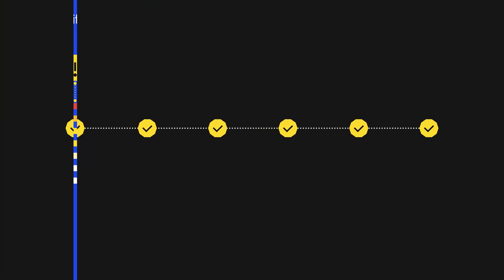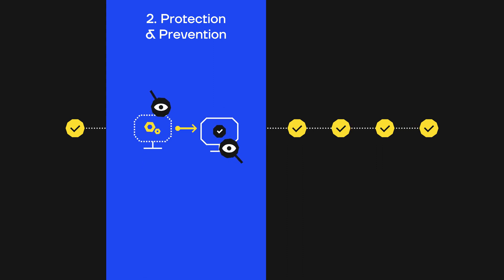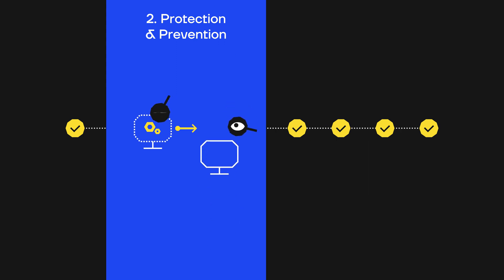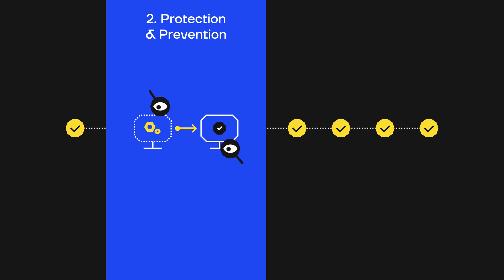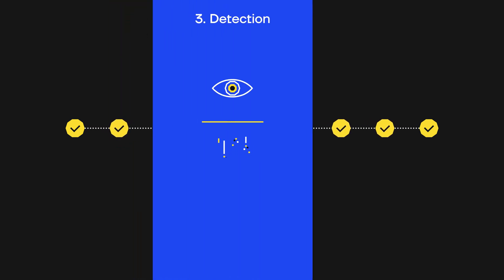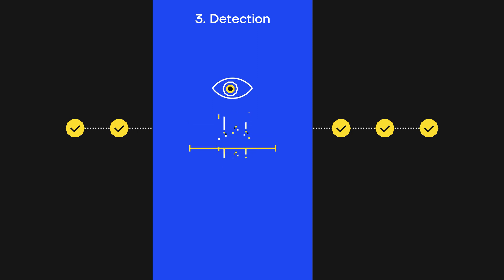Then on protection and prevention, where organizations shall continuously monitor and control those risks through security tools, policies, and procedures. On detection, not only meaning detection of incidents, but also conducting periodic assurance tests such as penetration testing.